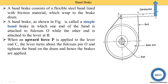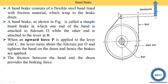When we apply the upward force at the lever, the lever moves and becomes inclined, so this end of the band is tightened. When the band is tight against the drum, the brake is applied. The friction between the band and the drum provides the braking force — friction is produced between the band and the brake drum.